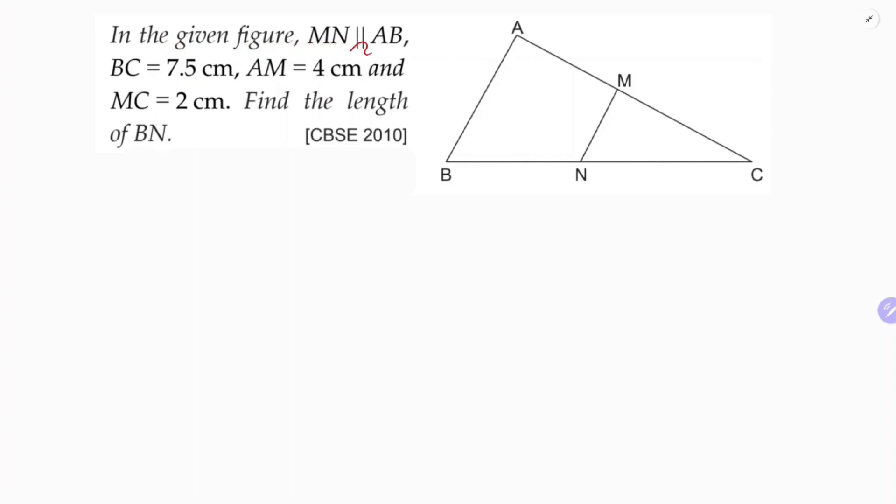In the given figure, MN is parallel to AB. BC is 7.5 cm, AM is 4 cm, and MC is 2 cm. We need to find the length of BN.